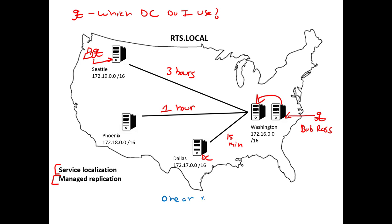A site is always one or more IP networks. In my picture, Washington is on the 172.16 network, Dallas on 172.17, Phoenix on 172.18, and Seattle on 172.19. Because of the way routing works, you cannot have the same IP network in two different locations connected to each other — routing would never take place. For example, I could not have a computer addressed 172.16 in Washington and another on that same network in Seattle, because traffic would never cross the WAN link — everything in Washington would say that's the local network.